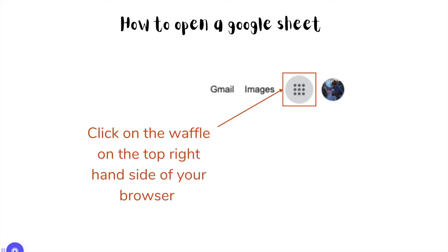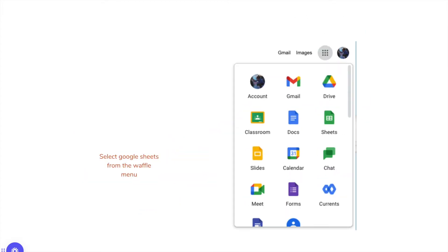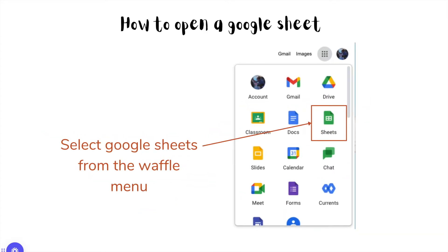So how do I get into Google Sheets? When you open a browser tab or window, you're going to see in the top right-hand side a little waffle icon. Click on that waffle and you'll see a menu drop down. Choose Google Sheets from the waffle menu and that will open a blank Google Sheet. Let's get started.